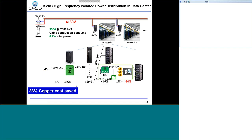We can also save copper on the DC line because we only need around 350 amps on this high-voltage AC-DC line. So you can also save the copper cost. In this proposed architecture, one of the key technologies is this high-frequency AC-DC converter.